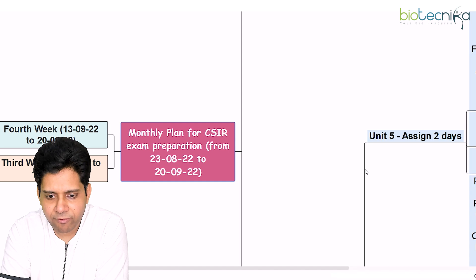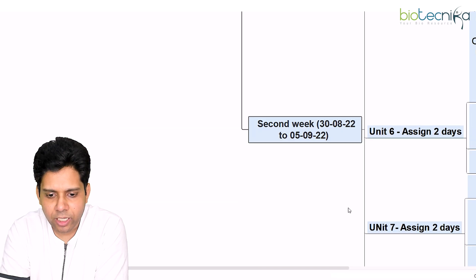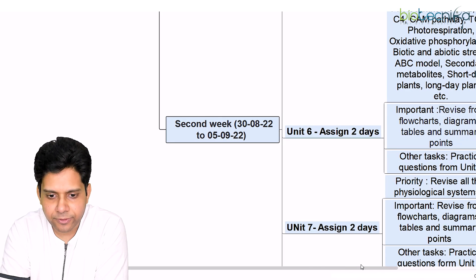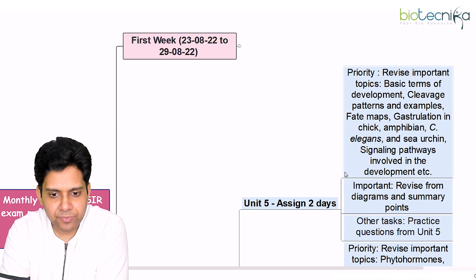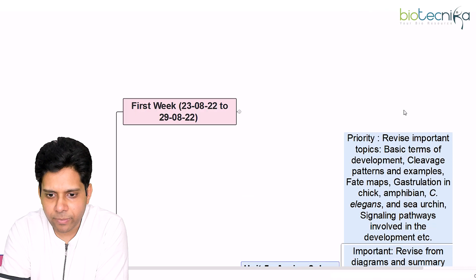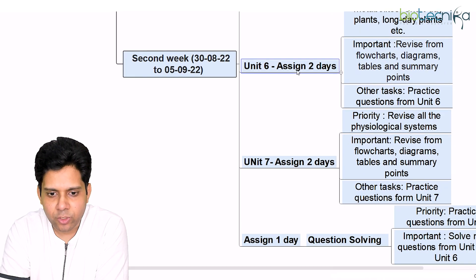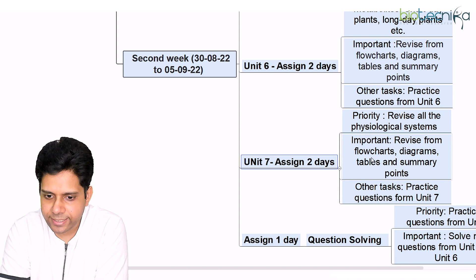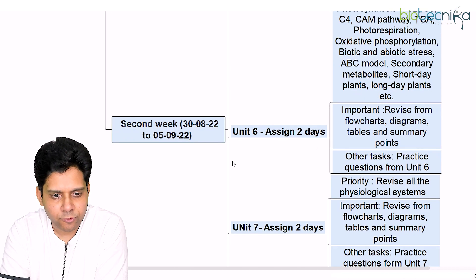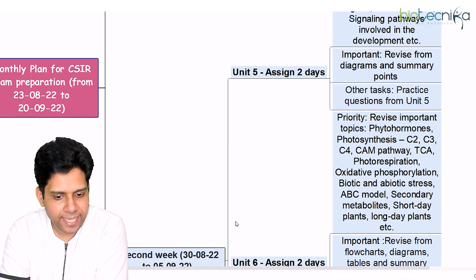Moving ahead to the second week, which runs from 30th August to 5th September — that's somewhere around Teacher's Day. You can assign two days to unit 5, covering the listed topics. Then unit 6 and its topics, followed by unit 7 and its topics, plus one day for question solving.